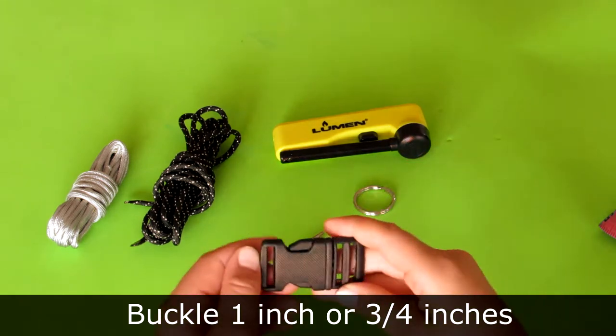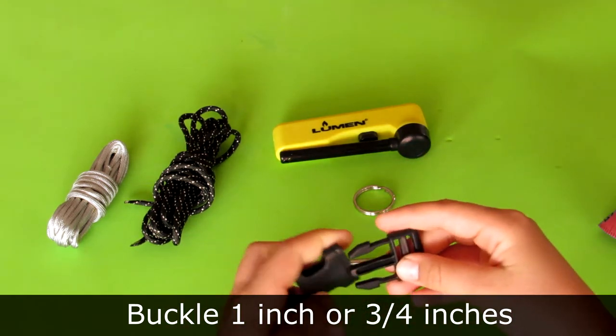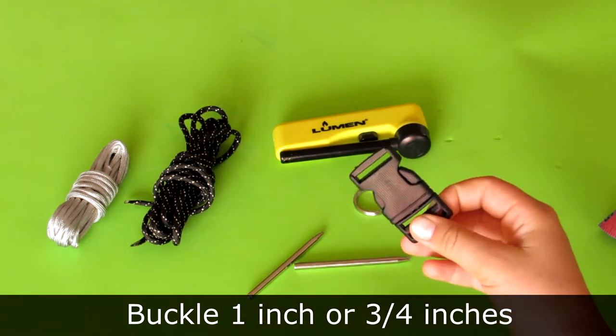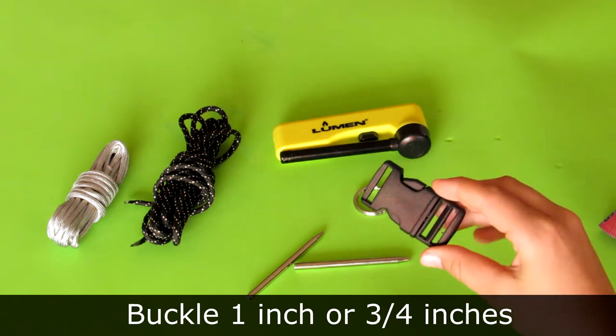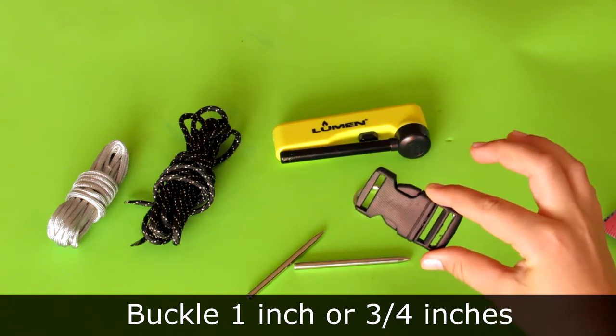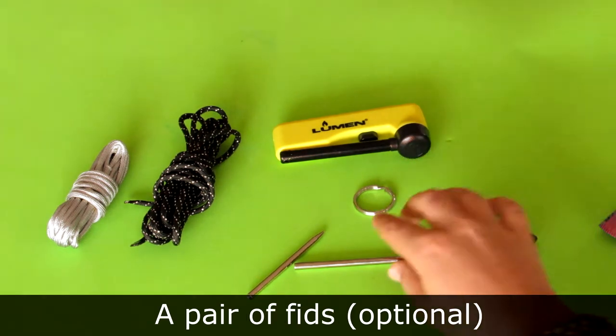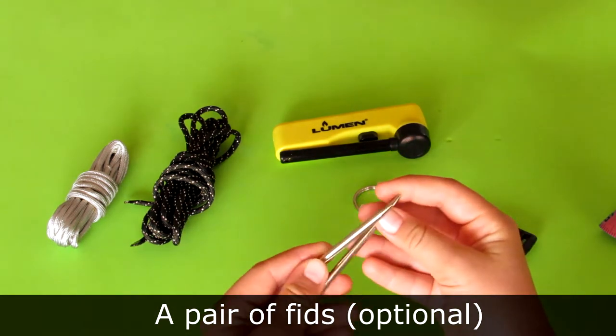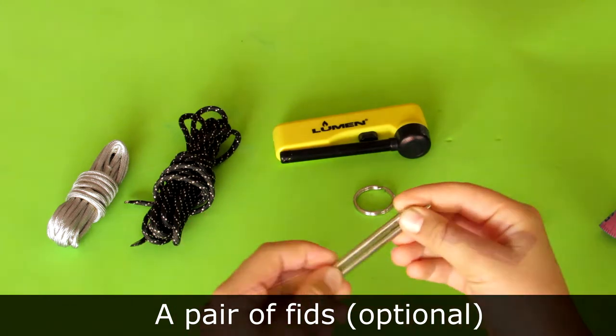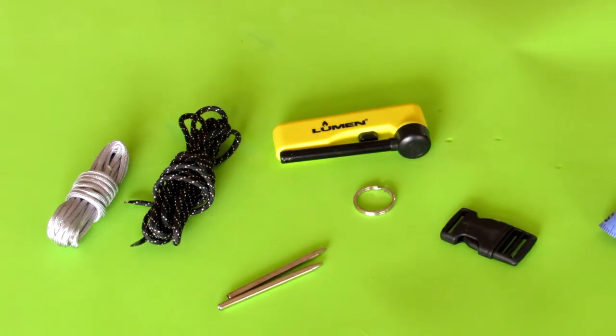You're also going to need a buckle. As you can see this is a buckle. This is a one inch buckle. You can use something smaller than that, just a bit like a three-fourth inch buckle, that would do. Then a pair of fids right here to finish off your weave. And that is all you're going to need to make your dog collar. So let's get started.